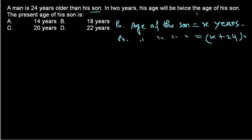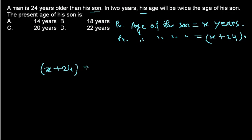Now let's find the equation — that's the systematic approach to solving age-related problems. In two years, the father's age will be twice the age of his son. So his age, which is X plus 24, will be twice the son's age, which is X. So we write: X plus 24 equals 2X.